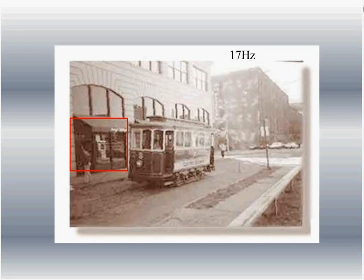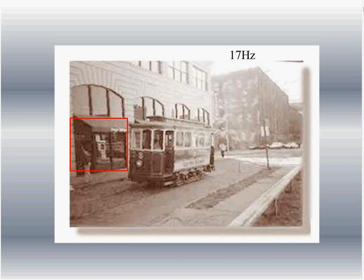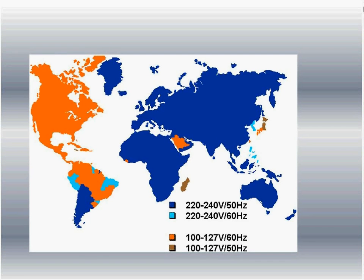If you've ever seen a TV screen on a TV screen, you'll see how the picture rolls — that's kind of what would happen here, because you could actually see the physical electricity moving through the light. We had to come to some kind of agreement as to what we were going to do in the world as far as how many hertz we were going to be running.